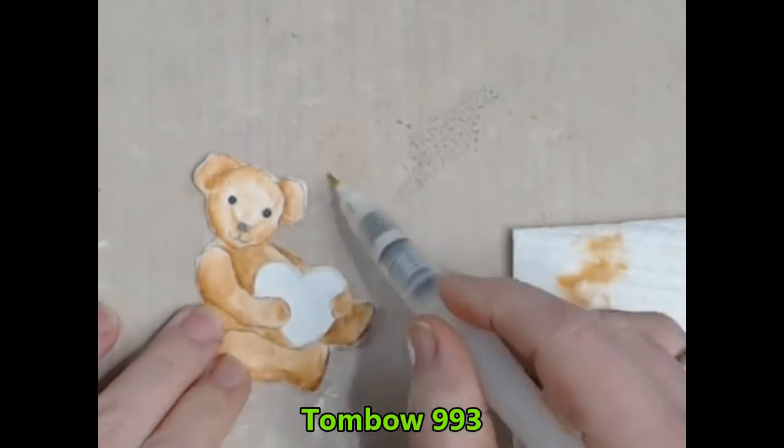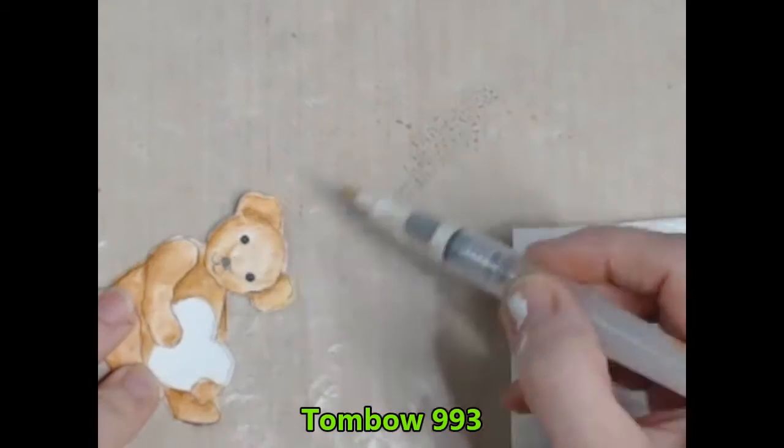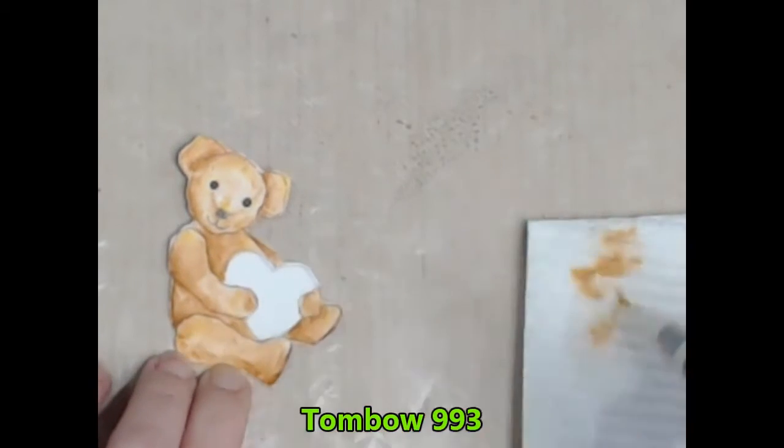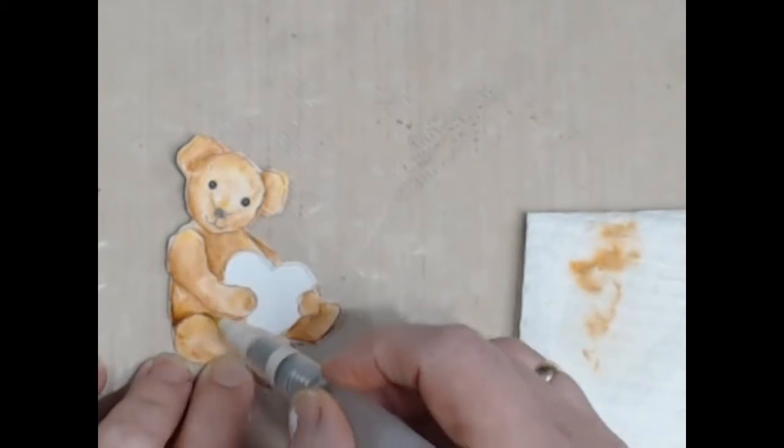Here I'm applying touches of a golden yellow just to enhance my teddy bear and reapplying some of that first colour to those darker areas.